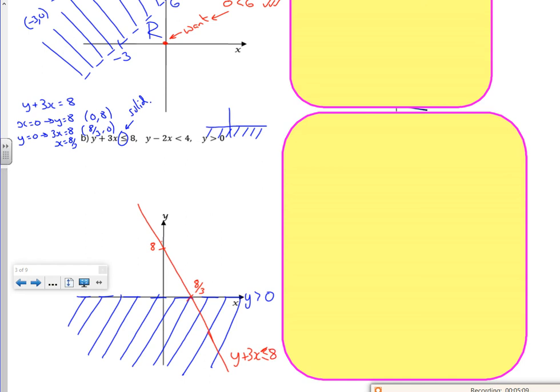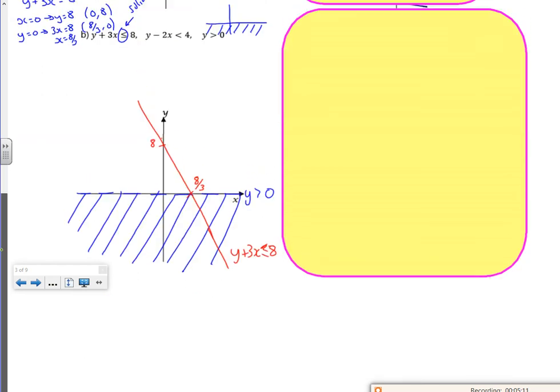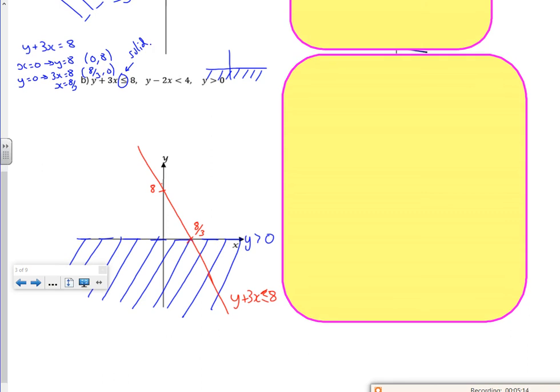Right, so now I've got to decide if 0, 0 is in the bit that I want. So if I look at 0, 0 for this one, I've got 0 plus 3 lots of 0 is less than or equal to 8. So 0 is less than or equal to 8. So that's wonderful. So 0, 0 is in. Which means that all this bit is out.